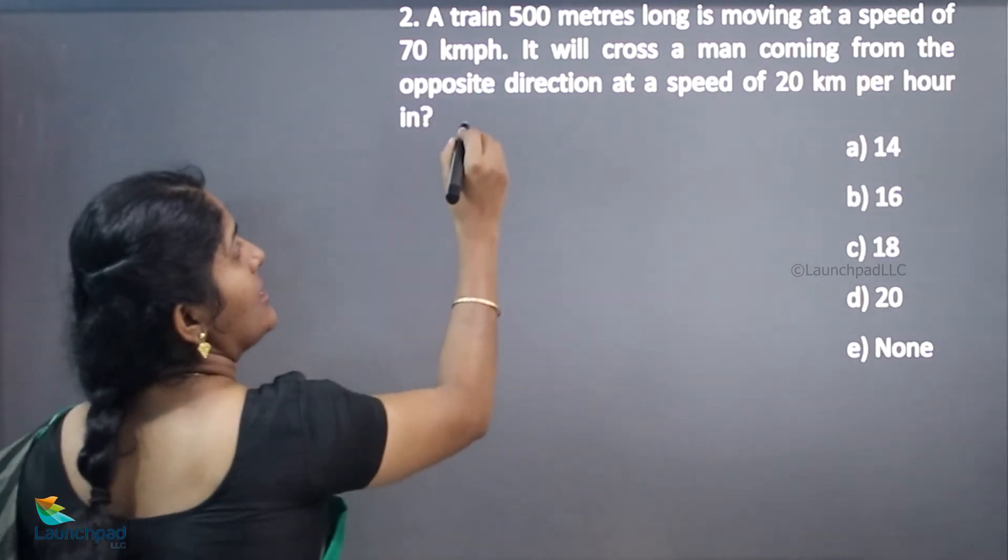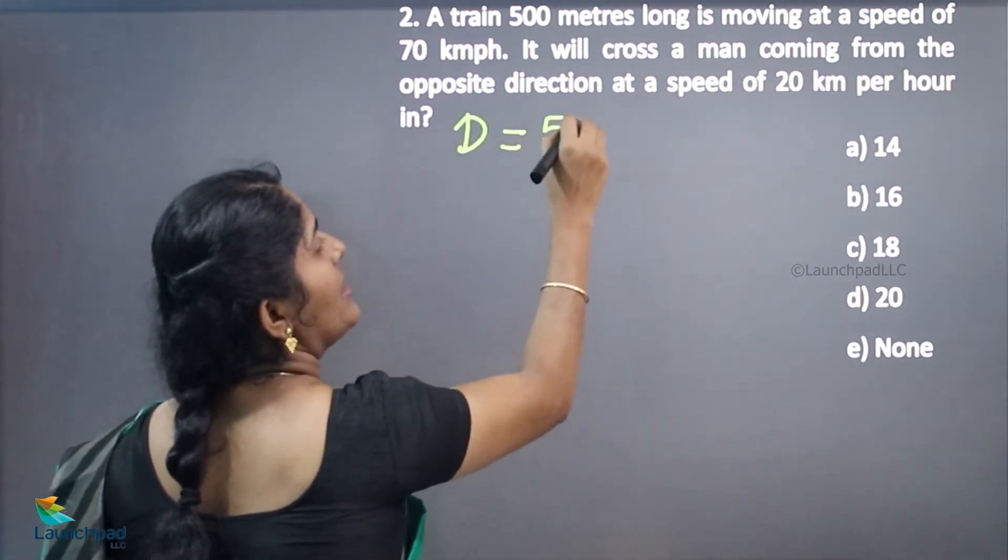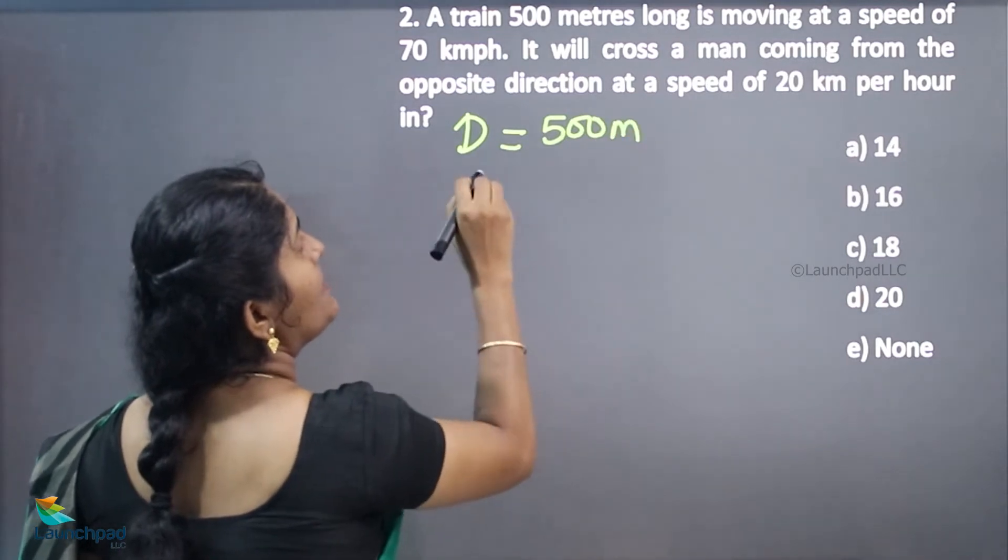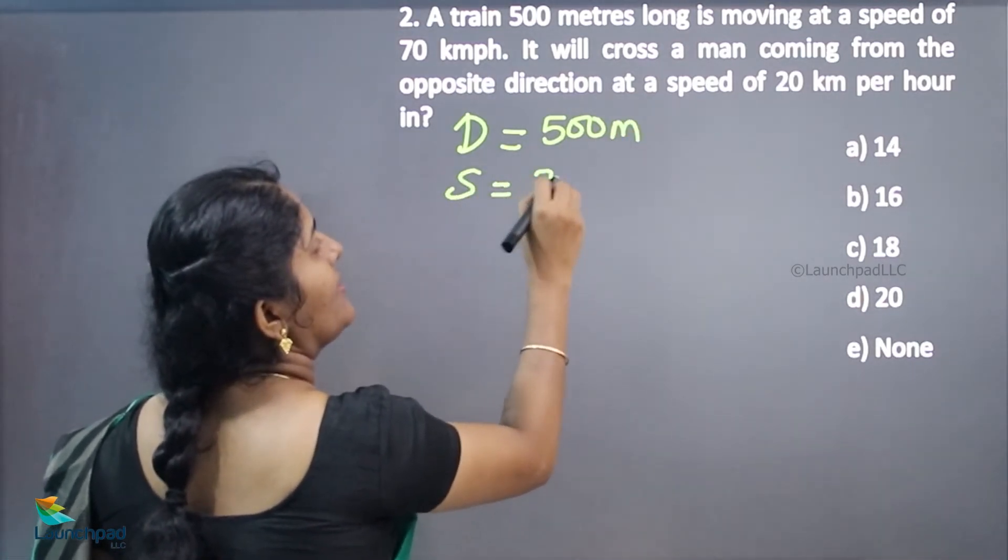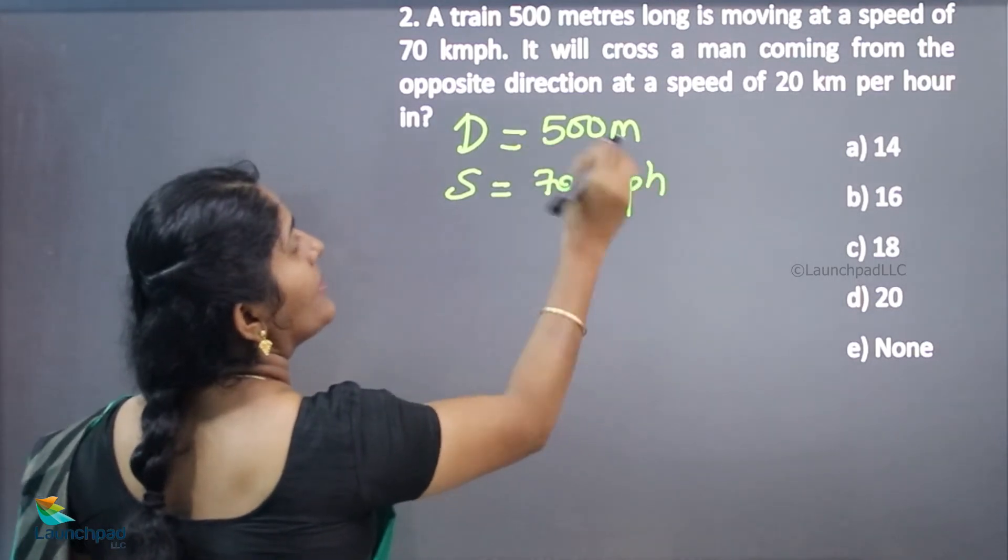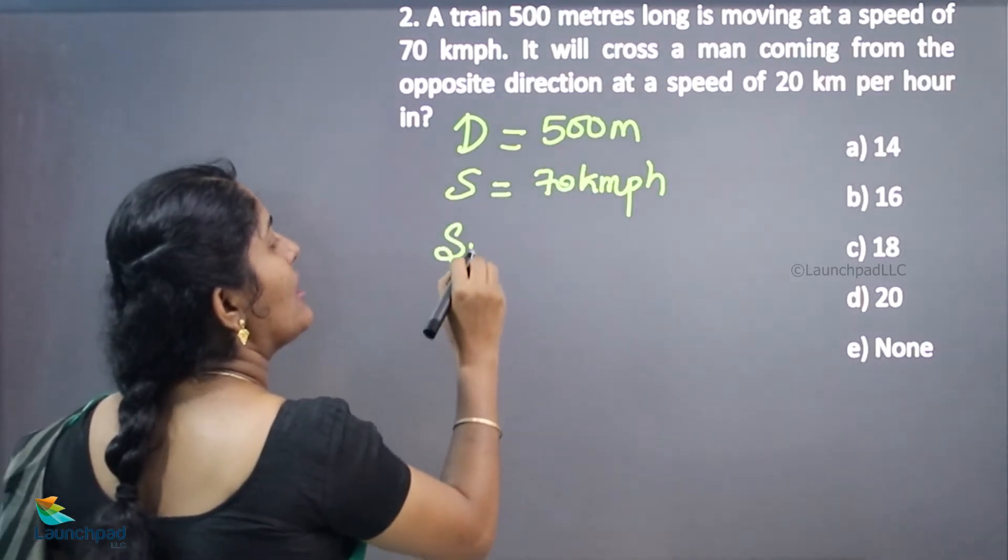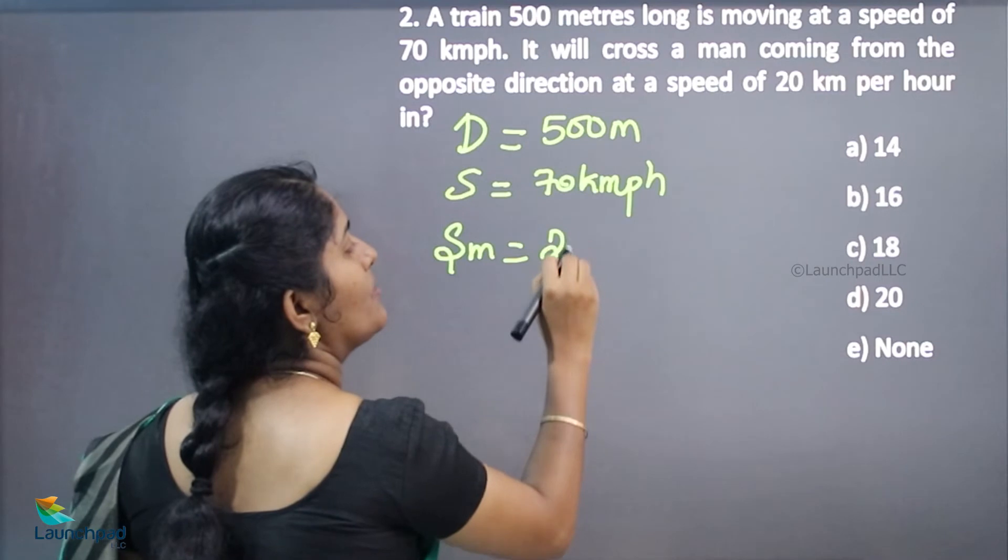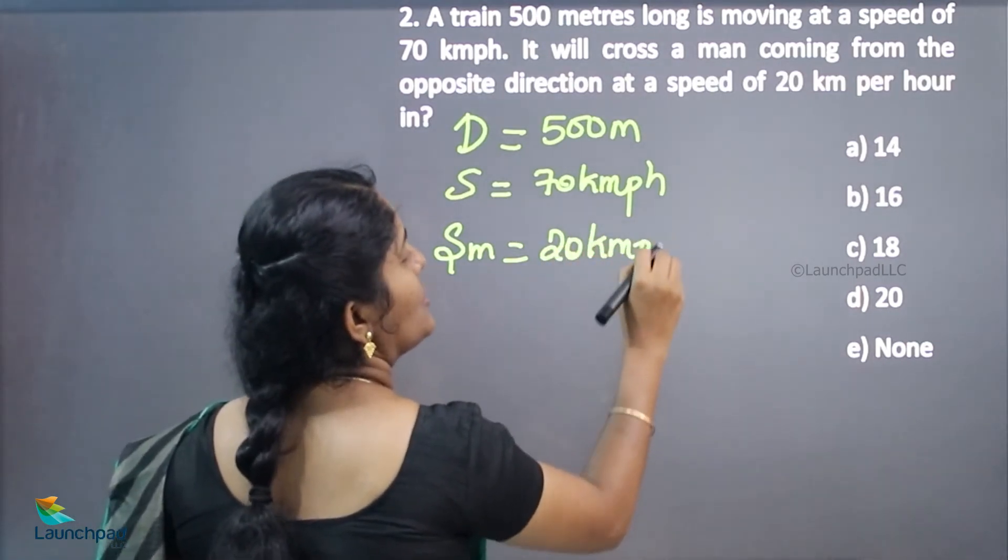The train length, or distance, is 500 meters. The speed of the train is 70 kilometers per hour. The speed of the man is 20 kilometers per hour. They are in opposite directions.